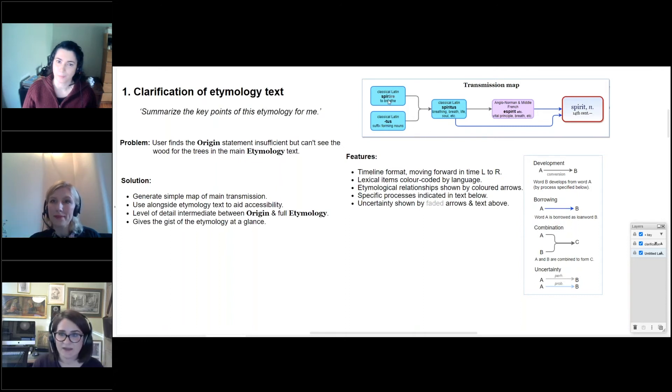Now, this is quite a lot of explanation for what I hope is actually a relatively self-explanatory diagram. I hope it tells the story of the main transmission of the noun spirit in quite a clear and intuitive way. That is, within classical Latin, the verb meaning to breathe is combined with a noun forming suffix to give a noun spiritus. That then develops by lineal descent into French esprit, and the French noun and the Latin noun, that's its etymon, are then both borrowed into English in the 14th century.